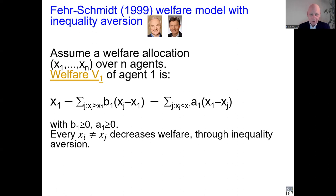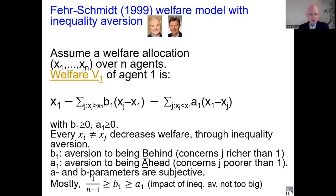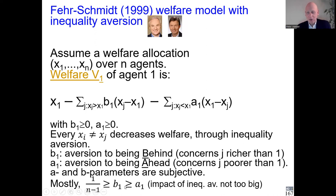All inequalities are decreasing welfare — that's what Fehr-Schmidt assume. Parameters b1 and a1 are subjective. The primary determinant of happiness is simply your wealth level; inequality terms add to it but should be smaller than 1/(n−1), since there are at most n−1 such terms and we want their total impact to be less than the first term. Also, typically b1 > a1, meaning the unhappiness from being behind is greater than from being ahead, which is plausible.